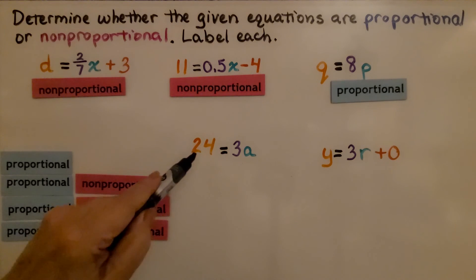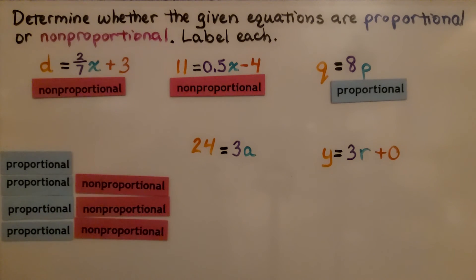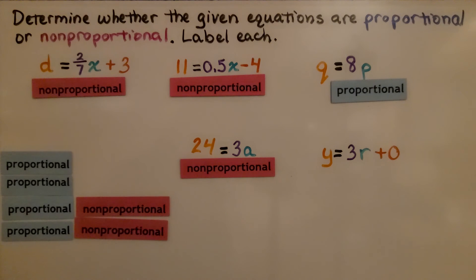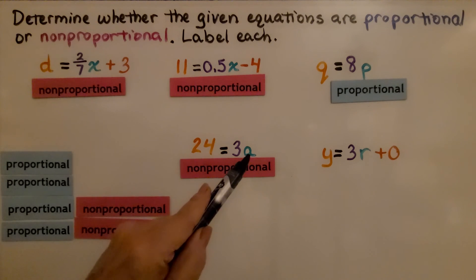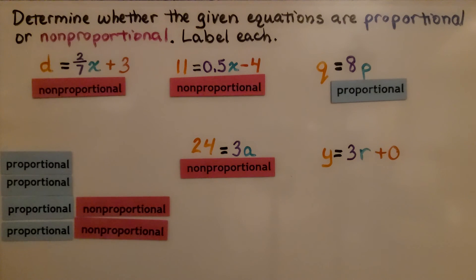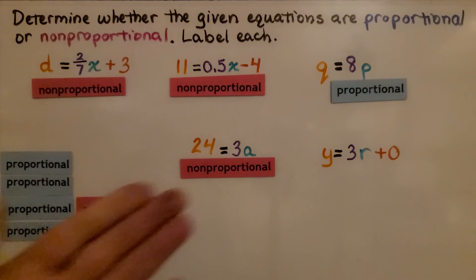Now look at this one: 24 equals 3a. Remember, we need two different variables to have a proportional relationship, and we only have one variable, a. This is a nonproportional relationship — there's no constant rate of change. The only value a can equal is 8, because 3 times 8 is 24.